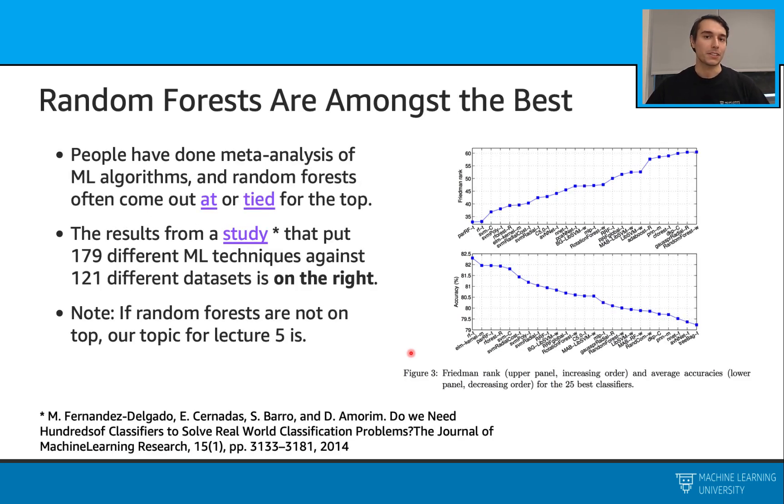Let's also talk about some results involving random forest models. People have done some meta-analysis of machine learning algorithms, and random forest models often come out at or tied for the top for those. And we also give a study here that looked at 179 different machine learning models against 121 different datasets. And here we have a plot for that.